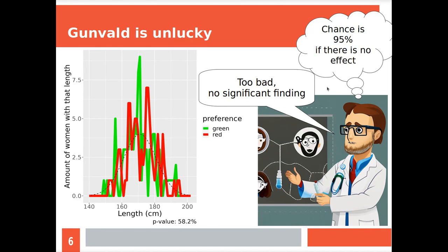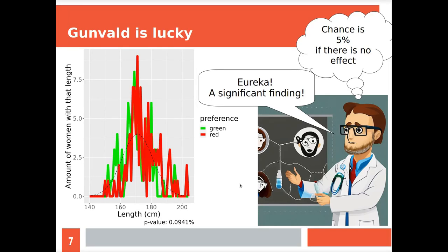When Gunvald does this survey, if he does it a hundred times, in five cases he will find an effect. In five percent of all cases, the same five percent used as a threshold, he'll find a significant effect. Gunvald knows this. He knows the chance to find nothing when there's no effect is 95 percent. But he also knows there's this chance of five percent to find something significant when nothing happens.